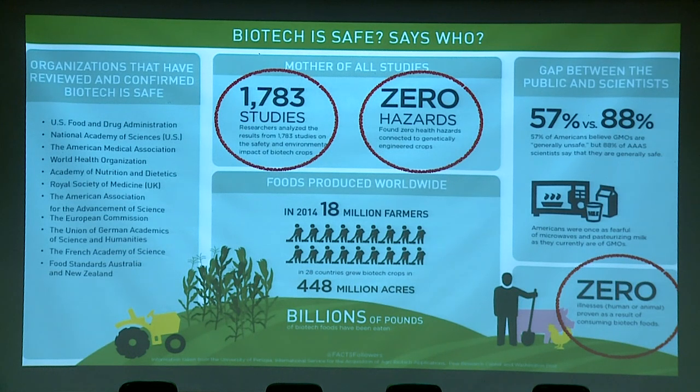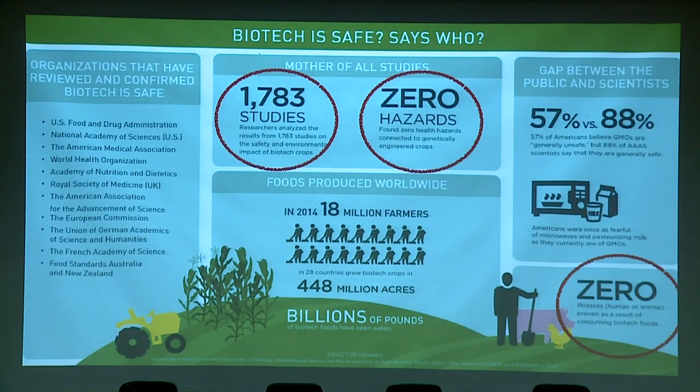Their conclusion: there is no credible evidence that today's GM crops are harmful to either humans or animals. No credible evidence that either people or animals are harmed by eating GM food or feed. But the public is not convinced anywhere in the world. A poll conducted by the Pew Research Center surveyed the American public at large and an unselected group of scientists belonging to the American Association for the Advancement of Science — AAAS, the publisher of Science Magazine.